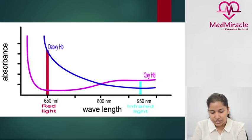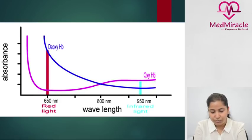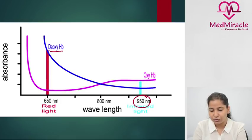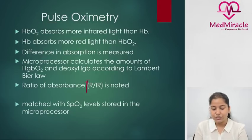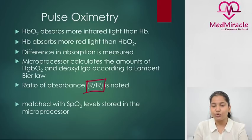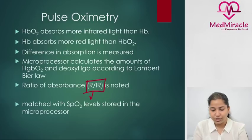Deoxyhemoglobin has higher absorption for red light and oxyhemoglobin has higher absorbance at 950 nanometers. The ratio of absorbance of red to infrared is noted and matched with SpO2 levels stored in the microprocessor, and whichever value matches is shown on the monitor.